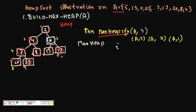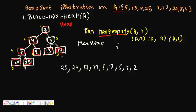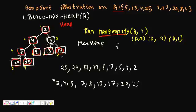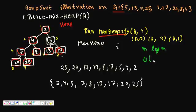The elements that came out in order were: 25, 20, 17, 13, 8, 7, 5, 4, 2. So the array is now sorted as: 2, 4, 5, 7, 8, 13, 17, 20, 25. This is Heapsort. For the running time complexity: we had n elements, and for each we called Max Heapify which takes O(log n) time, so the total is O(n log n).